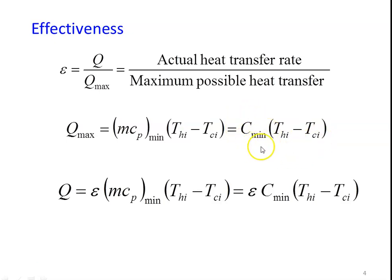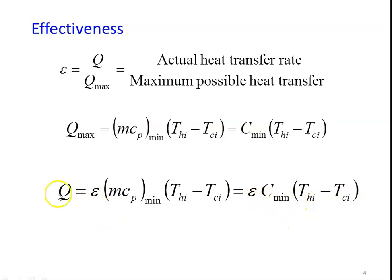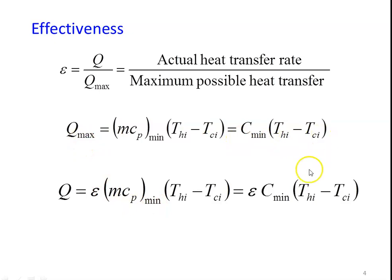So Q maximum equals C minimum into (Thi minus Tci). From the definition of Epsilon, we can calculate the Actual Heat Transfer: Q equals Epsilon into Q maximum, which equals Epsilon into C minimum into (Thi minus Tci). So remember: Epsilon equals Q by Q maximum, and Q maximum equals C minimum into (Thi minus Tci).